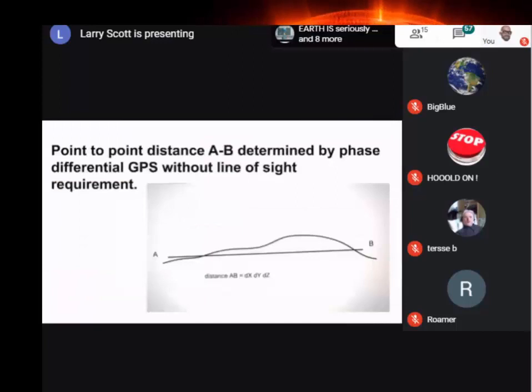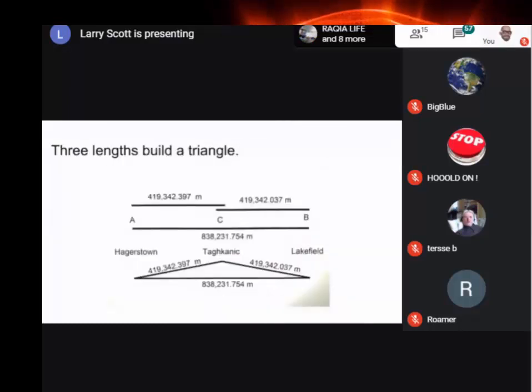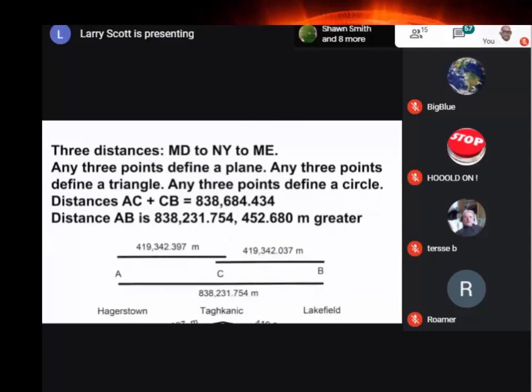Now, when dealing with A to B measurement by GPS, line of sight doesn't mean anything. The receivers record data independently without any interaction between the receivers. They're strictly, purely independent. So I measure a distance from A to B, and I measure a distance from A to C, C to B, and B to A. Now, if you look at this, these three distances, this is Hagerstown, Tachanek, New York, and Lakefield. Those three points are in a straight line, but you notice the distances overlap.